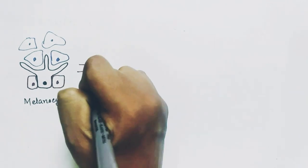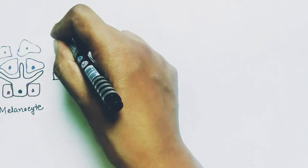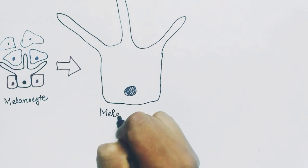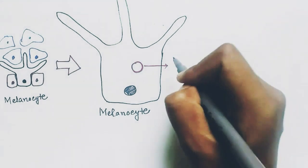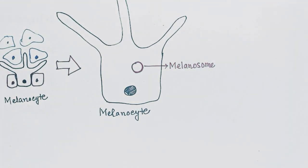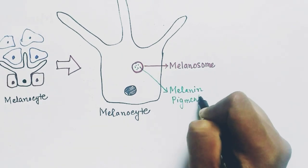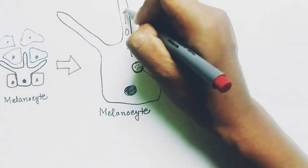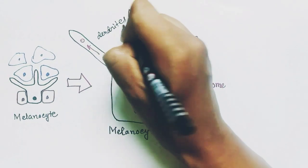Zooming into the picture, this is a melanocyte cell having dendrites. This is the nucleus of the melanocyte cell. Melanocytes have a special type of cell organelle called the melanosome. These melanosome organelles inside the melanocyte can produce melanin pigment. These melanosomes, with the melanin pigment, migrate towards the dendrites of the melanocyte, which extend towards the stratum spinosum keratinocytes.